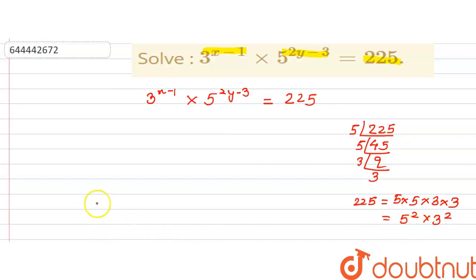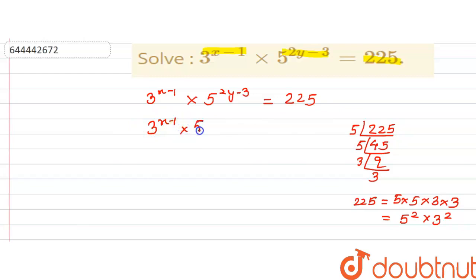Since powers of the same base can be compared, let us write down the value of 225. So we get 3^(x-1) into 5^(2y-3) equal to 5² × 3². Now let us compare the powers of the same base.